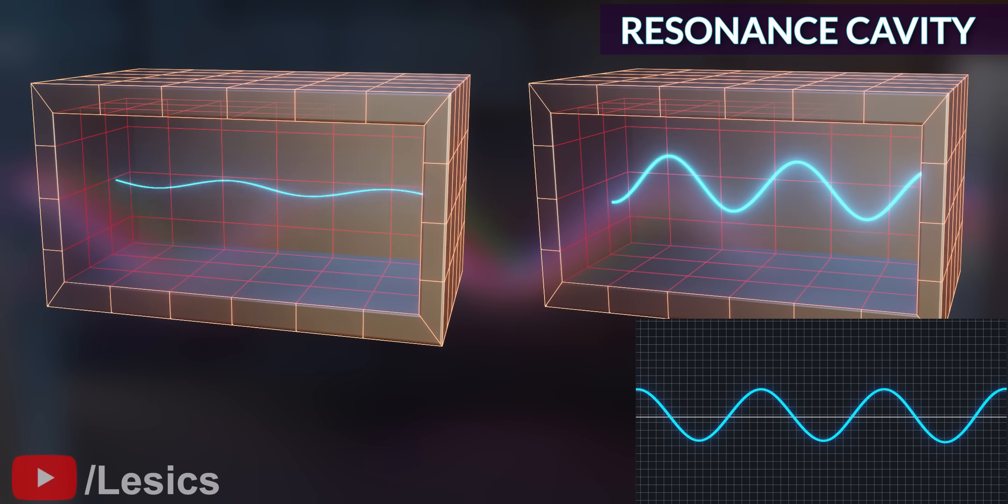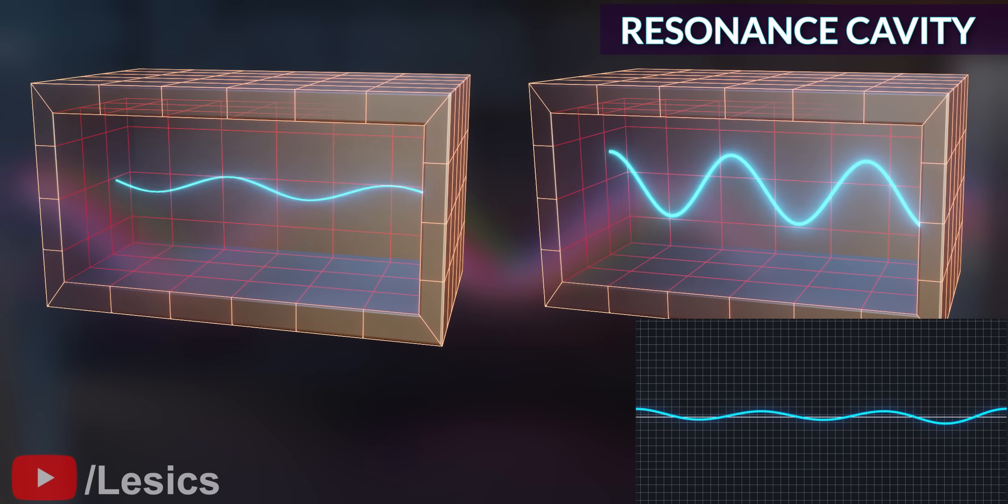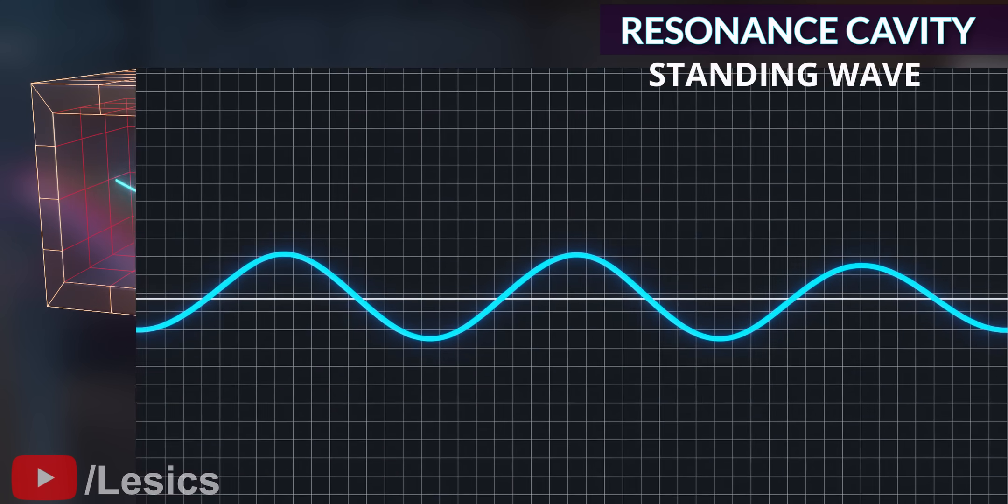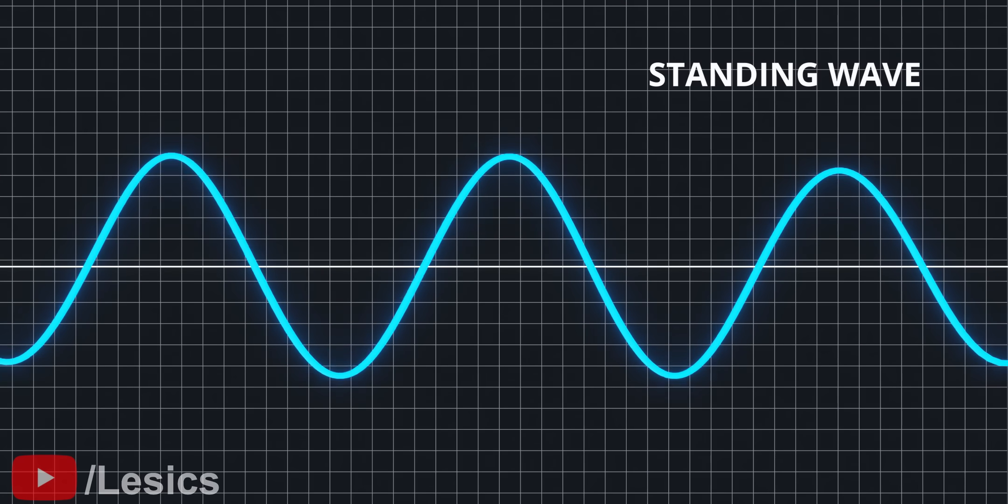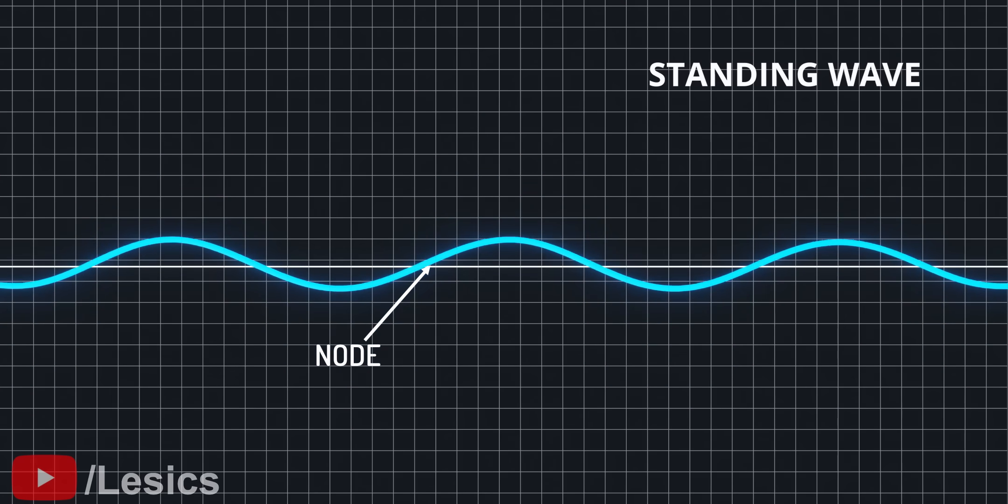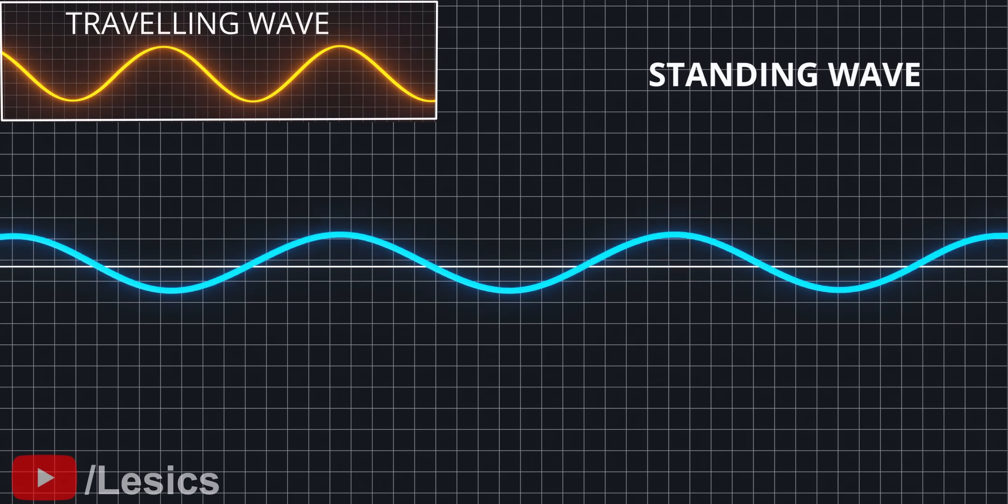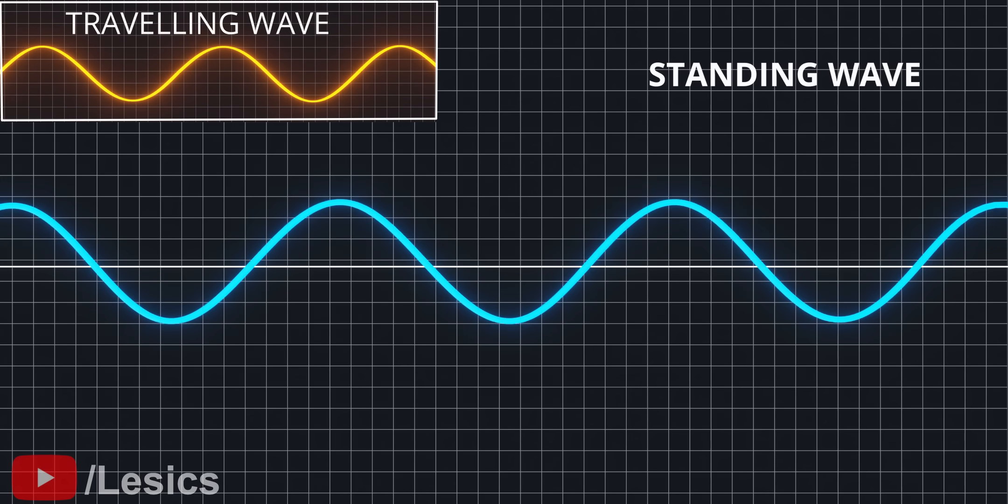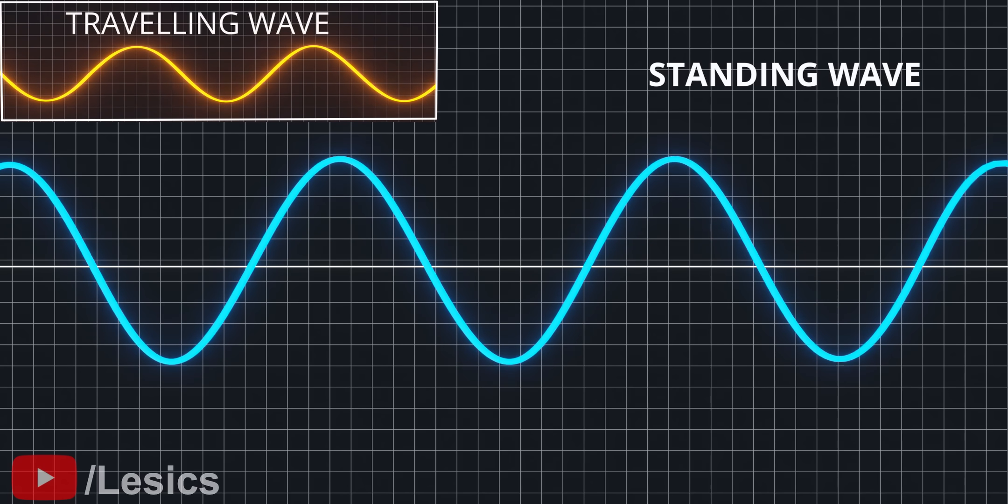Let's understand the concept of resonance cavity using a simplified approach of standing waves. A standing wave is a stationary wave that fluctuates in time but does not propagate in space. Just by observing these two wave animations, you can understand how a standing wave is different from a normal traveling wave.